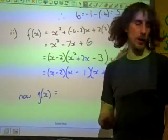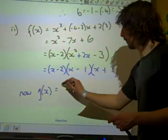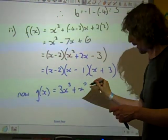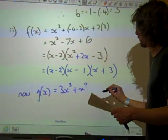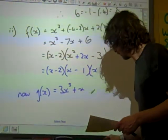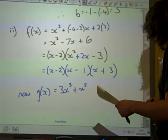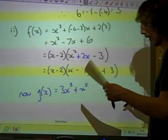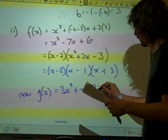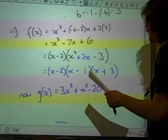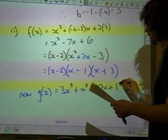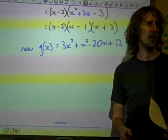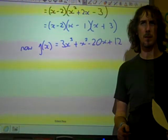g of x, if we use those values of a and b, is going to be 3x cubed plus x squared. What was a? a was minus 4, wasn't it? So that's minus 20x. And b was 3, so that's plus 12. What do you reckon? And I think, keep it simple with this. Rather than go through all the hassle of factorising it, let's test out these values.